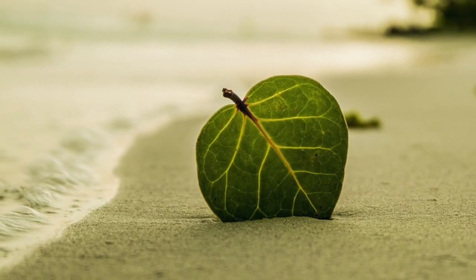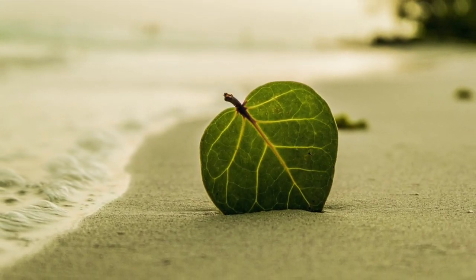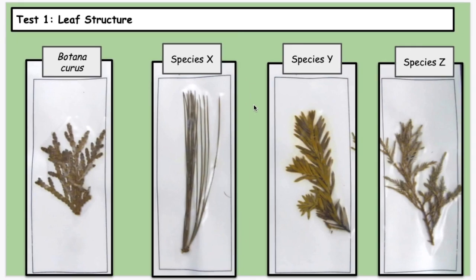The first test is a physical test comparing the structures of the leaves. You want to look for things that are going to be either pointy or branched. With Botanicuris, you can see there's a lot of branches. Species X has no branches, but very pointy. Species Y has these big chunks - I wouldn't really call them branches. Species Z has lots of branches, but also is a little pointy in the end.